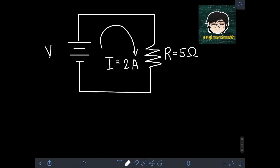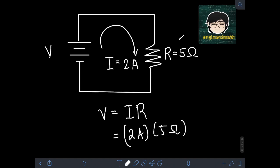Now, what if it is known that the current flowing through a 5Ω resistor is 2A? We can find the value of the voltage as V is equal to current times resistance. Substituting the values, current is 2A times resistance is 5Ω, so the voltage is equal to 2 times 5, or 10V.